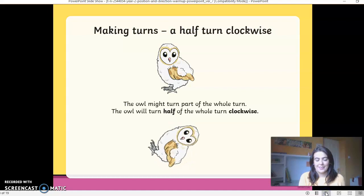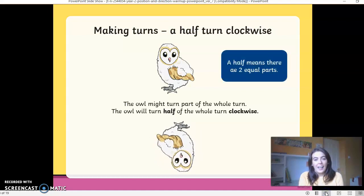How are you now? Perfect. A half turn, half means there are two equal parts. And as you can see, he was upright. Now he's upside down. Well done.